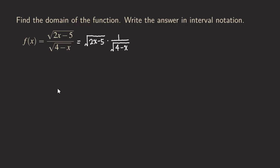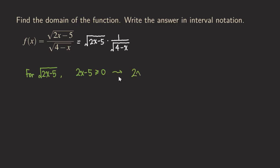First we are going to find the domain for the square root of 2x minus 5. For the square root of 2x minus 5, we set the expression inside the square root to be greater than or equal to 0, because we require it to be a real-valued function. So that means 2x minus 5 must be greater than or equal to 0, so that we don't get an imaginary number. Solving this inequality, we move the 5 over to get 2x ≥ 5, then divide both sides by 2, giving us x ≥ 5/2.